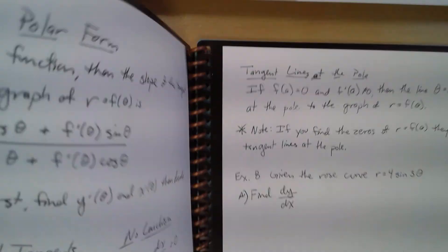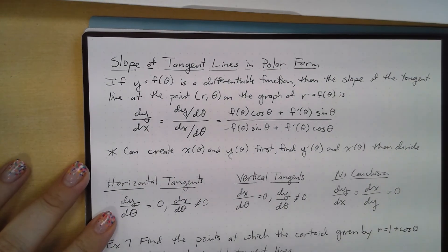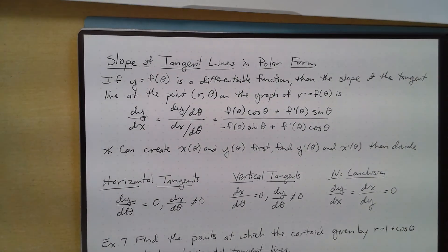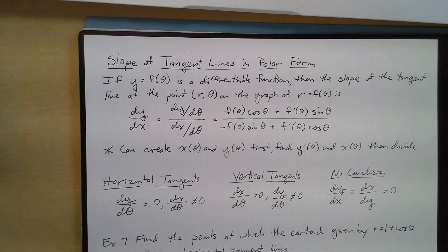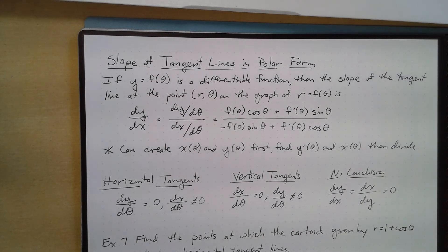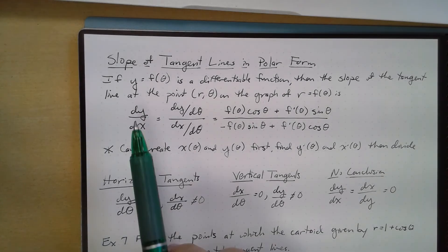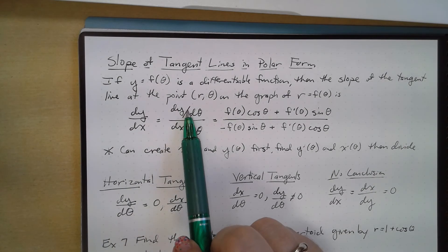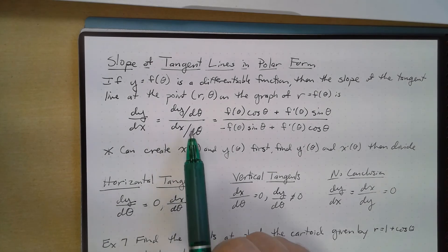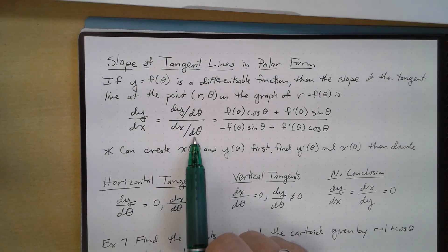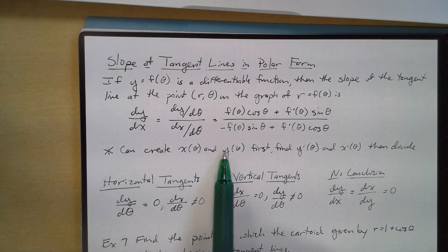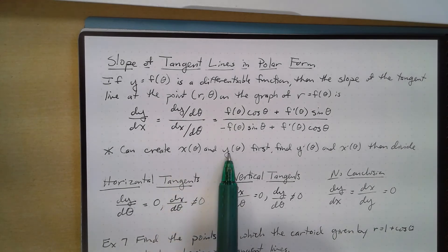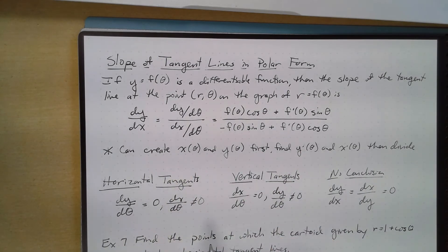Now let's talk about calculus and the slope of tangent lines. If we're given a polar function, dy/dx equals (dy/dθ) divided by (dx/dθ). It's easiest to first express x as a function of θ and y as a function of θ, find those derivatives separately, and then divide.